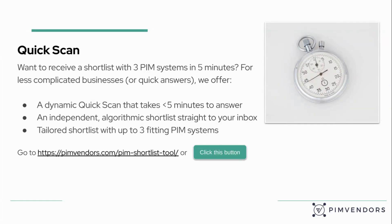If you're in a rush and want to receive a shortlist with three PIM systems in less than five minutes, we have a quick scan for less complicated businesses or for quick answers. It's a dynamic quick scan, so depending on your answers, you get a shorter or longer version. It takes only five minutes to answer all the questions. An independent algorithm delivers the results straight to your inbox, and you'll get a tailored shortlist with up to three fitting PIM systems. You can follow the link below or click the button to go to the quick scan.